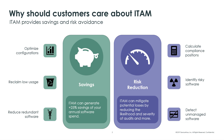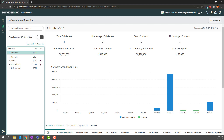This is where we can see if someone goes out and buys software using their company credit cards. As we're on the topic of software spend detection, let's jump into the instance and actually see an example. When I navigate to the software spend detection module, part of SAM, I can see all my publishers that I have expense and accounts payable information.